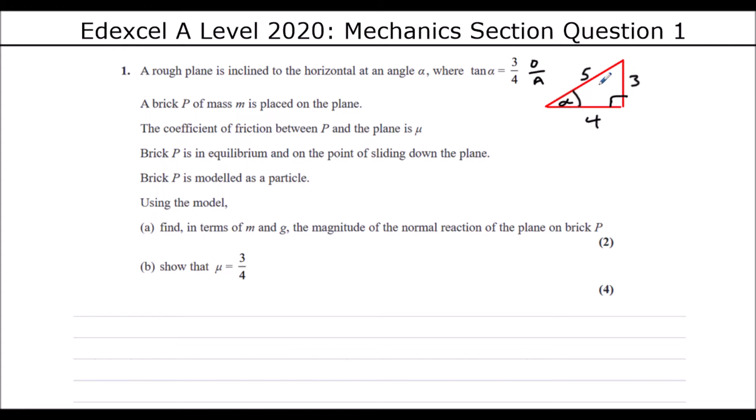So now we know all the lengths of the triangle. We can write down what cos alpha and sin alpha are. So cos is adjacent divided by hypotenuse, 4 fifths, and sin alpha will be the opposite divided by the hypotenuse, 3 fifths.